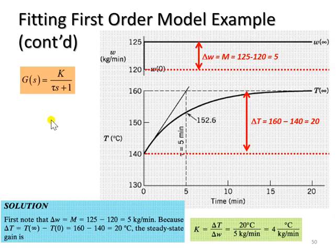In order to fit the first order model, we have to find the parameters of this transfer function G(s), which means we need to find out what is the K, or process gain, and tau, the time constant. So let's look at the first parameter, the process gain.